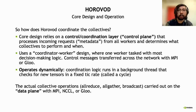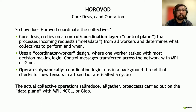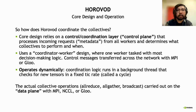How does Horovod coordinate these collectives? The core design relies on something called the control plane, which processes incoming metadata requests from all workers and determines what collectives to perform and at what time. This control plane uses a coordinator-worker design where a single worker handles all decision-making logic. Control messages are generated and transferred from the coordinator to the workers across the network using MPI or the GLOO communication library. The control plane operates dynamically—coordination logic runs in a background thread on each worker that checks for new tensors at a fixed tick rate, which we call a Horovod cycle. For example, every one millisecond or so, this background thread wakes up, checks for new messages, and then goes back to sleep. Once the coordination plane determines there is common collective work across workers, the actual collective operations are carried out in the data plane using MPI, NCCL, or GLOO.